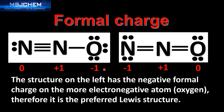So if you have an example where the overall formal charge on two Lewis structures is the same, then you look to the Lewis structure which has the negative formal charge on the most electronegative atom. That's all from this video — don't forget to check the video description for a link to a practice worksheet.